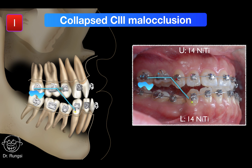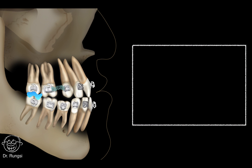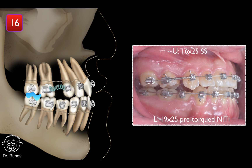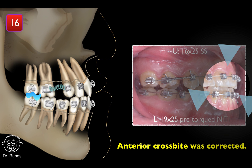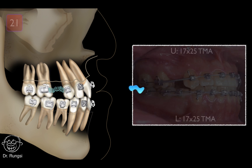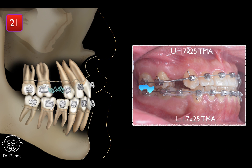Class 3 elastics were used to retract the lower anterior teeth. In addition to making space for the implant site, an open coil spring was used to procline upper anterior teeth and distalize upper posterior teeth. After 16 months, the anterior crossbite was corrected. At the 21st month, as the curve of Spee was corrected, bite plates were removed to allow posterior tooth contact.